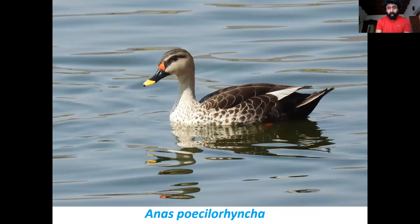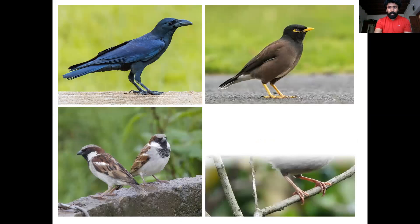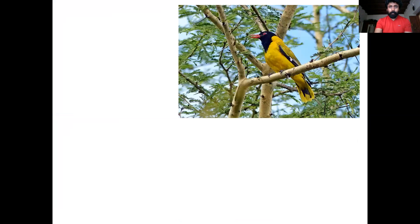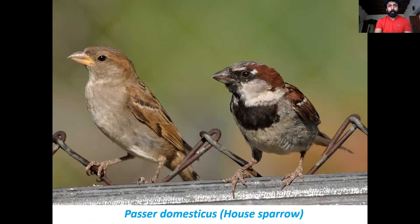The third order is Passeriformes, or the perching birds, which includes so many songbirds and songless birds — crow, myna, sparrow, babbler, oriole, drongo, paradise flycatcher, bulbul, and drongo. The example for Passeriformes is Passer domesticus, the house sparrow. You can see sexually dimorphic forms here — the paler one on the right is the female and the darker shade is the male. Look at the beak — it is granivorous type to peck grains — and the feet have perching adaptation to perch on twigs.